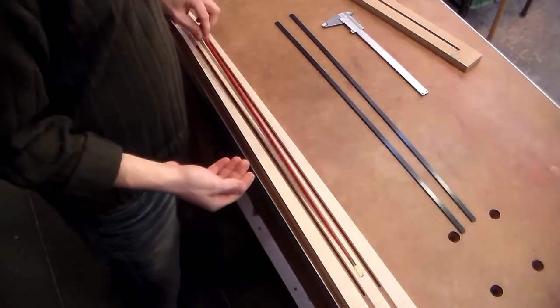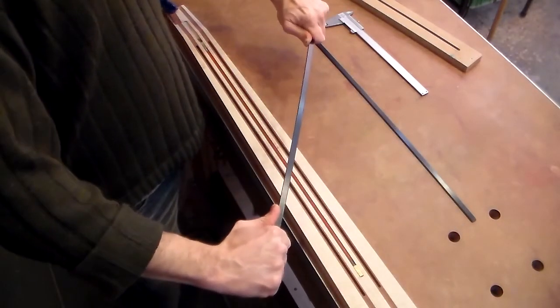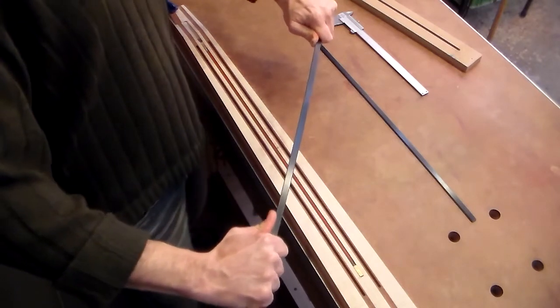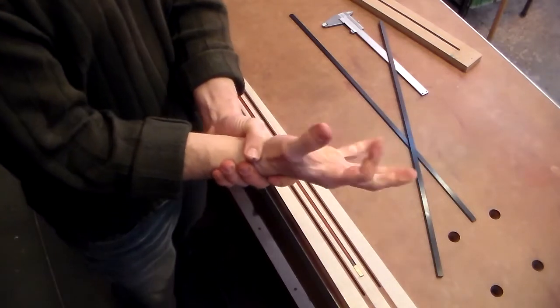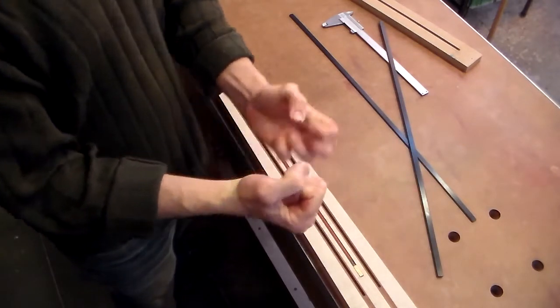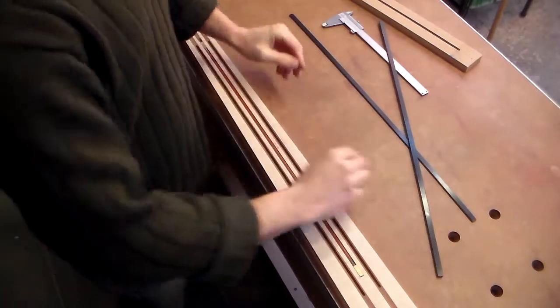And here goes the truss rod and the carbon fiber reinforcements. They are really, really hard stuff. Not even I can break them. But they are also very light, so they don't add significant weight to the neck, and they make it much stronger.